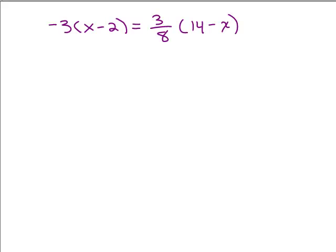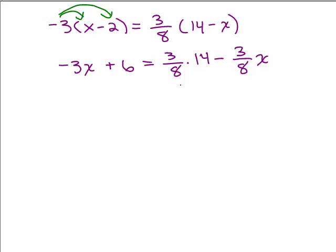So we get negative 3 times x is negative 3x and be careful here for the second one. You're doing negative 3 times a negative 2, that's going to be plus 6. Over here we've got 3/8 times 14 minus 3/8 x. Now you can go ahead and cancel here but the least common denominator is still going to be 8 so I'm going to suggest you go ahead and just leave that as it is.